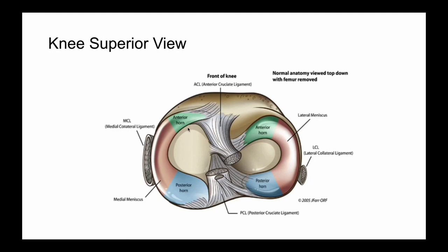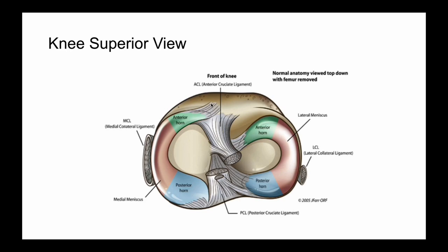This image illustrates the ACL and PCL relative to their tibial insertions. The ACL inserts into the anterior aspect of the tibial plateau and, though cut here, would extend posteriorly and superiorly to the lateral femoral condyle. In contrast, the PCL inserts on the posterior aspect of the tibial plateau and would continue anteriorly and superiorly to the medial femoral condyle. The areas of tibial plateau where the femoral condyles articulate are also visible in the medial and lateral regions.